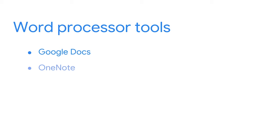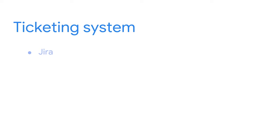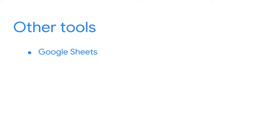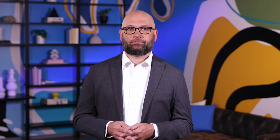Word processors are a common way to document. Some popular tools include Google Docs, OneNote, Evernote, and Notepad++. Ticketing systems like Jira can also be used to document and track incidents. Google Sheets, audio recorders, cameras, and handwritten notes are also tools you can use to document. Our discussion on documentation has only just begun — soon you'll use your incident handler's journal to put your documentation skills to work.